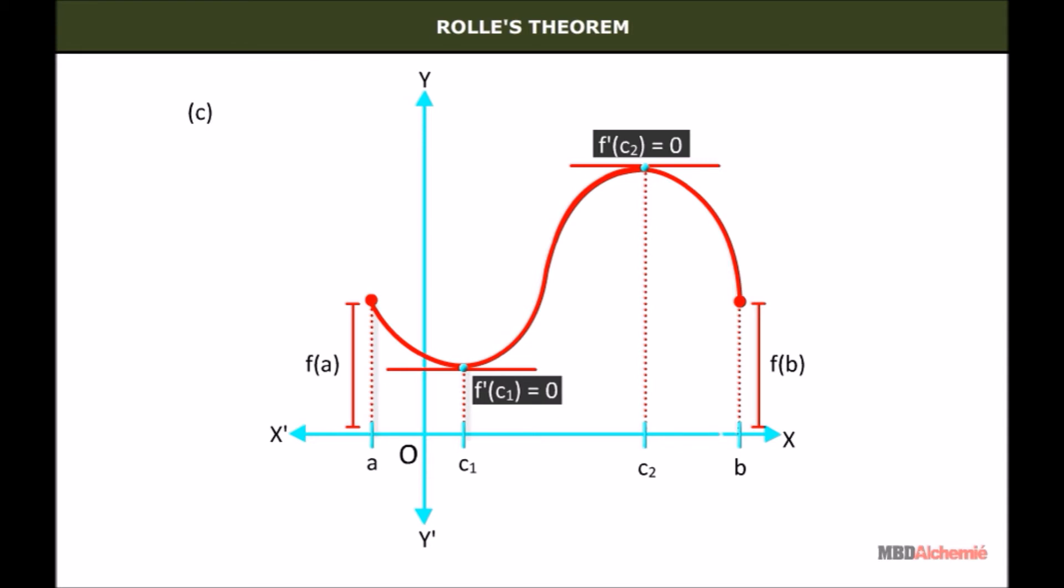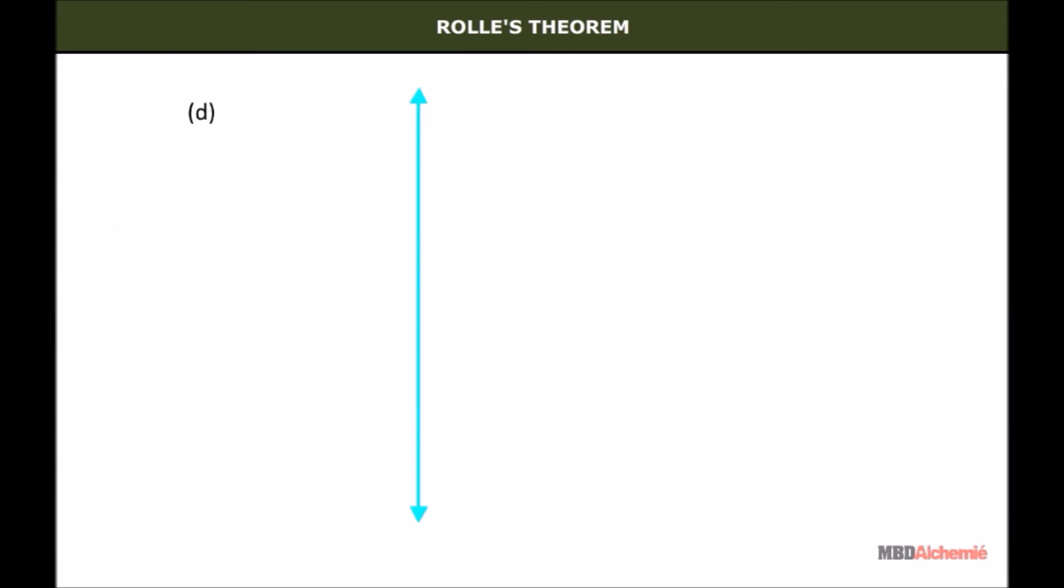both points lie between a and b. And in the last graph, f(a) = f(b). There is a point where the tangent is parallel to the x-axis, which lies between a and b.